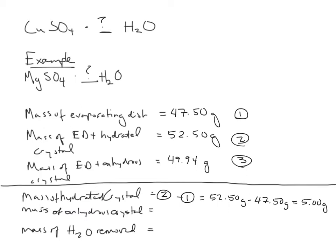The mass of the anhydrous crystal, so this would be the value number 3 minus number 1. And here it will be 49.94 grams minus 47.50 grams. And the value of that is 2.44 grams for your anhydrous crystal.